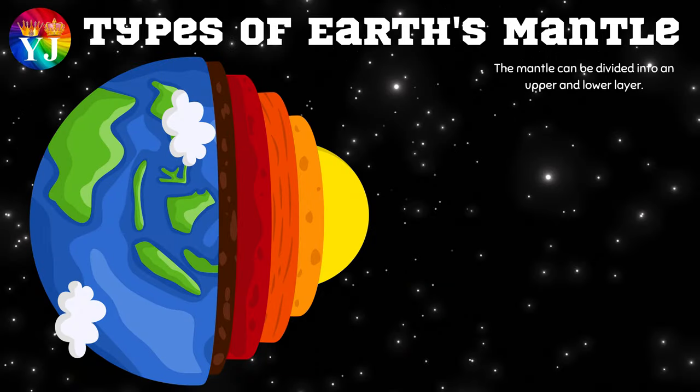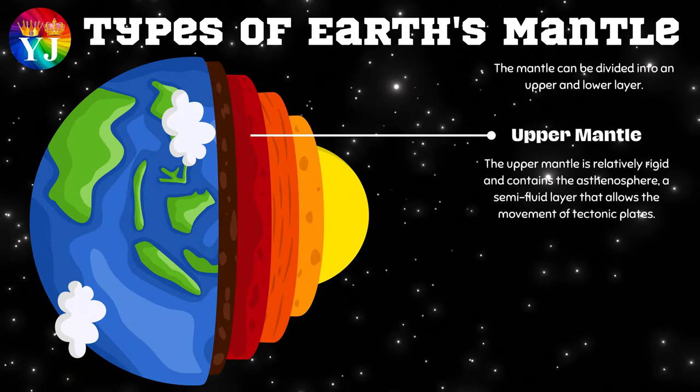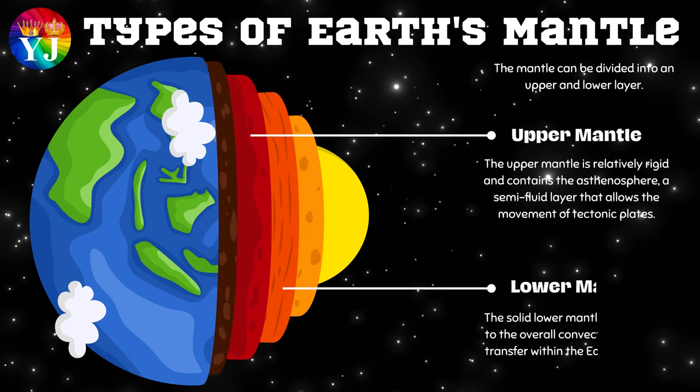The upper mantle is relatively rigid and contains the asthenosphere, a semi-fluid layer that allows the movement of tectonic plates. The solid lower mantle contributes to the overall convection and heat transfer within the Earth's interior.